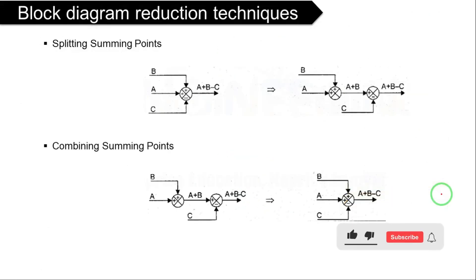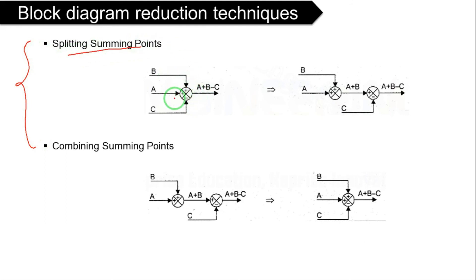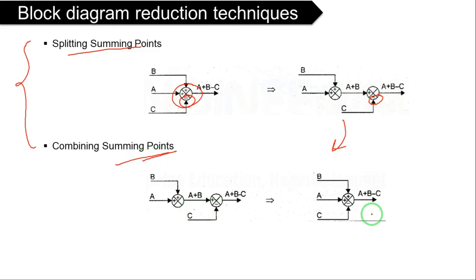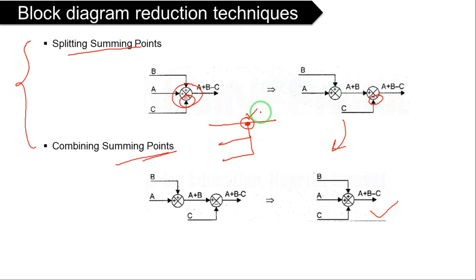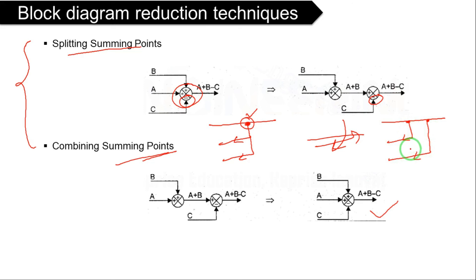Two more rules help reduce block diagrams. Splitting summing points: if a summing point has three inputs, you can split it into two separate summing points each with two inputs. Conversely, two summing points can be combined into one. Similarly, a takeoff point with two feedback branches can be split into two separate takeoff points to simplify the diagram.